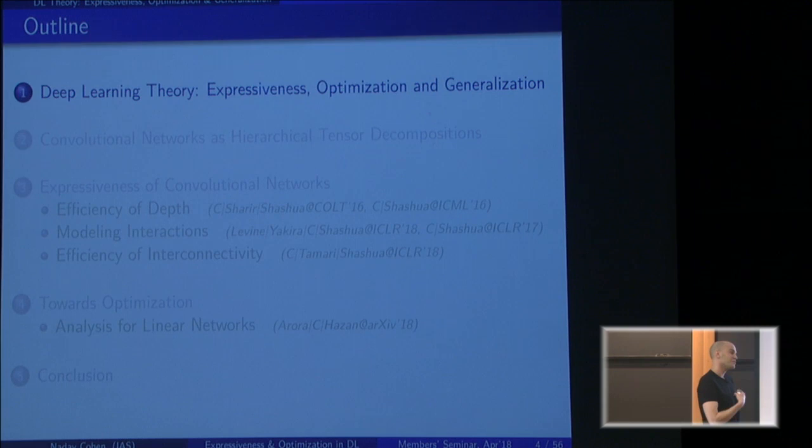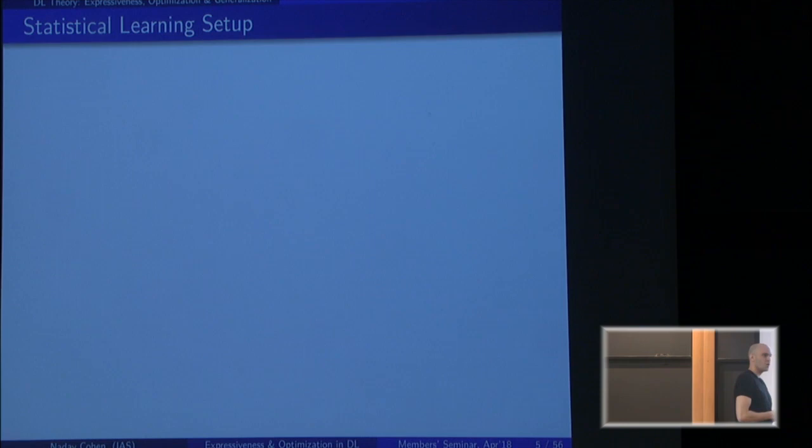At the end of the day, deep learning, at least from my perspective, is a particular class of machine learning — statistical learning models. If we want to formalize questions in the area of deep learning theory, we have to start with statistical learning. What I'll present here is the fundamental basic statistical learning setup.